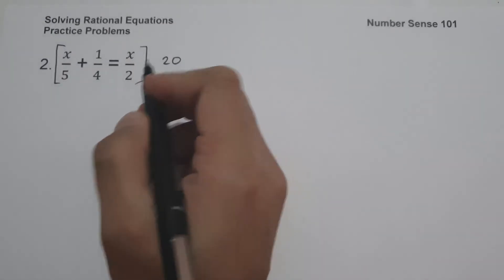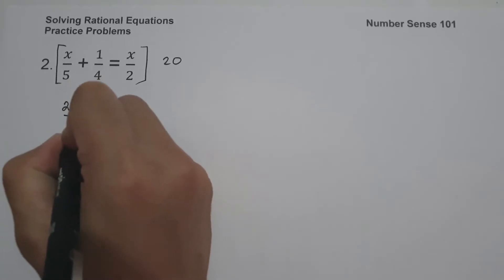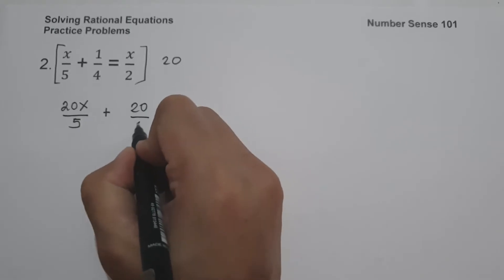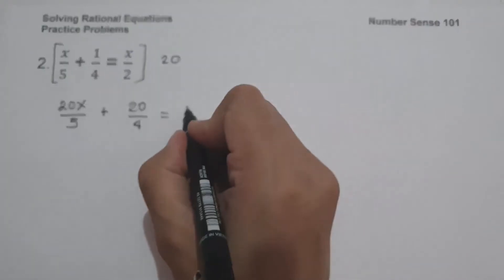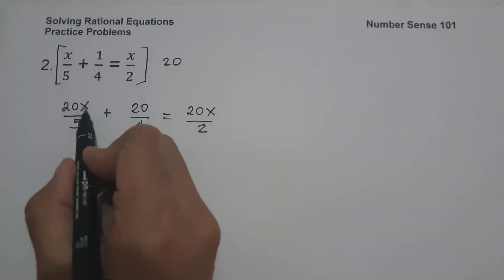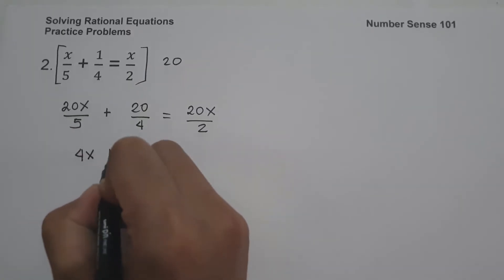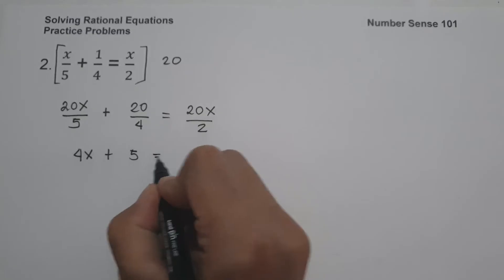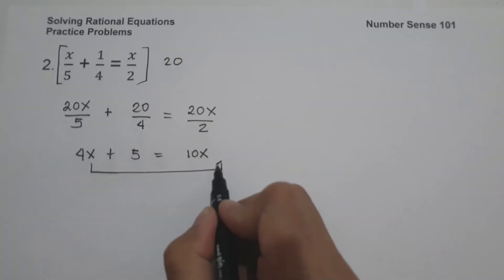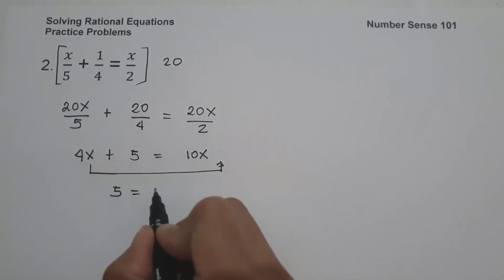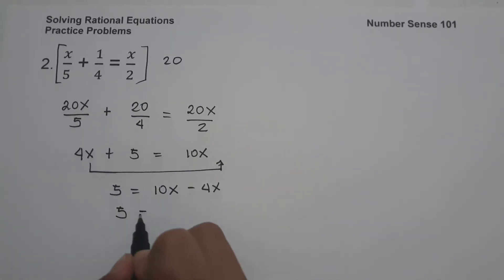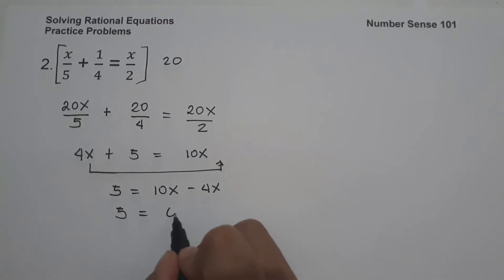So x multiplied by 20 is 20x over 5, and 1 multiplied by 20 is 20 over 4, and x times 20 is 20x over 2. Simplifying: 20x divided by 5 is 4x, 20 divided by 4 is 5, and 20x divided by 2 is 10x. Moving 4x to the side of 10x gives us 5 equals 10x minus 4x, that is 6x.